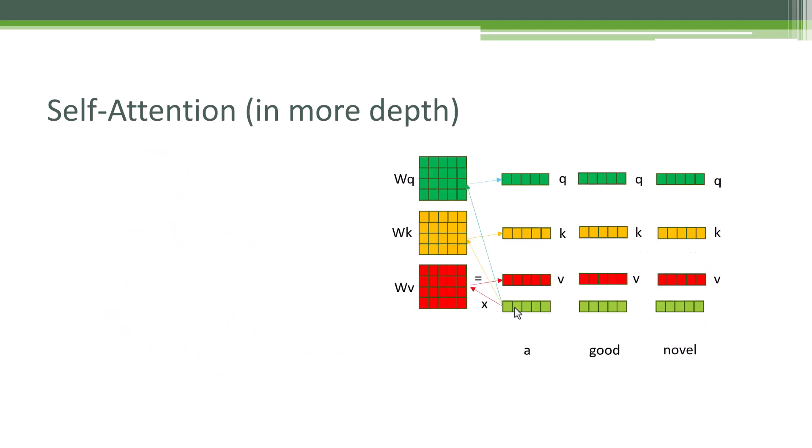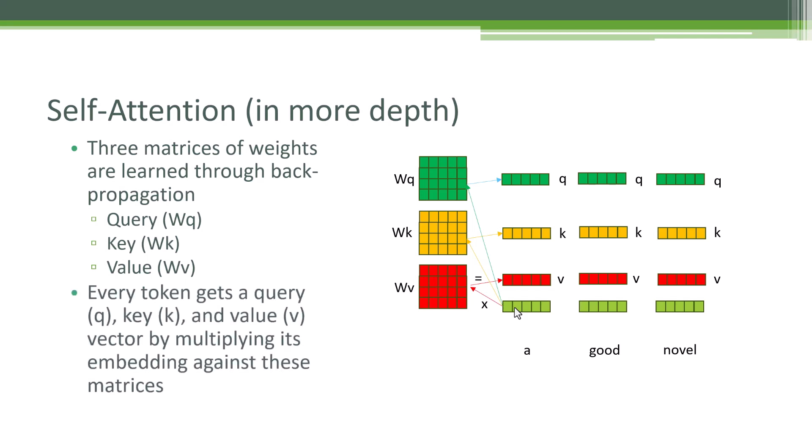Now, as for the mechanics of how this all works, you're probably not going to be asked to implement this, but it is fun to know about it. Basically it relies on three matrices that are learned through back propagation. So by training this giant large learning model, part of what you're training are these matrices. They're called the query matrix, the key matrix, and the value matrix. So every token that we're processing is going to get a query, key, and value vector. That's just made by multiplying its embedding that we're coming in with against those matrices. And we do that for every token.